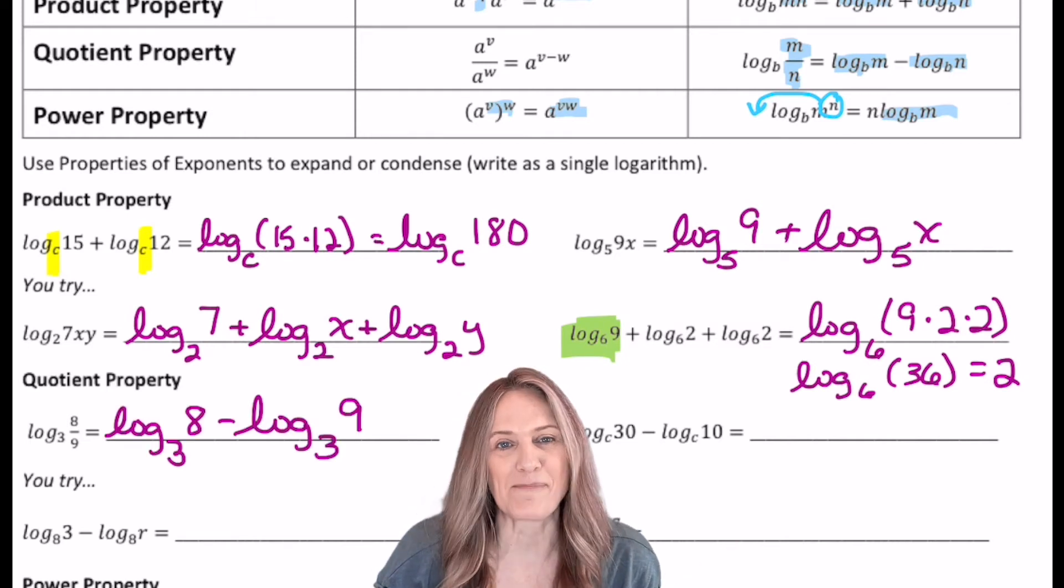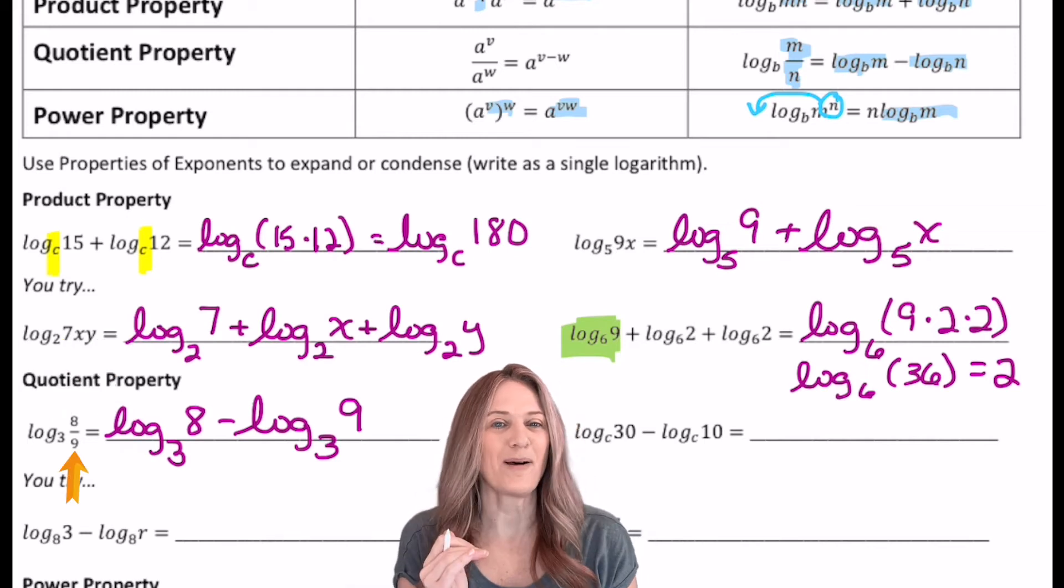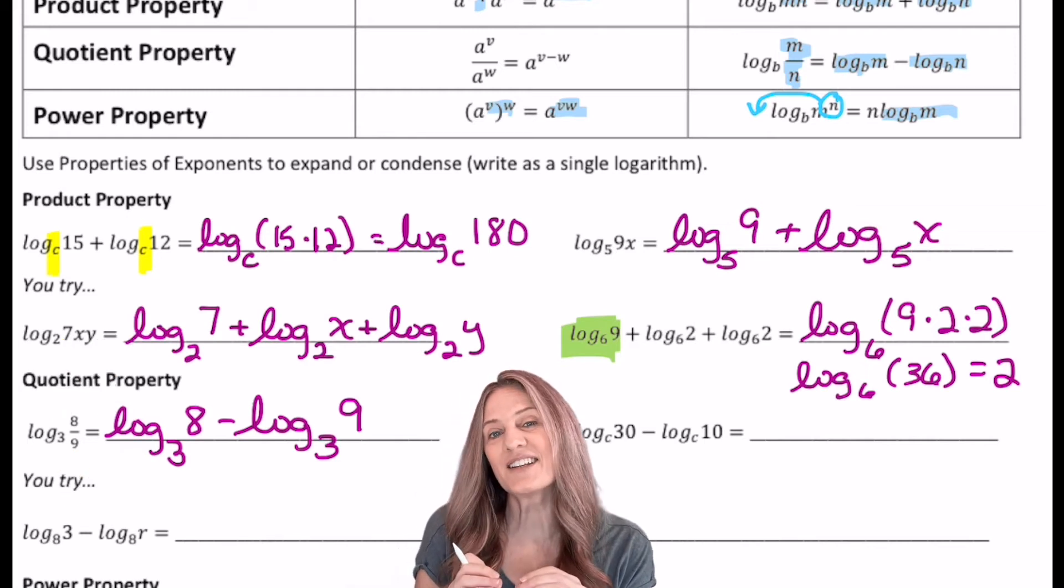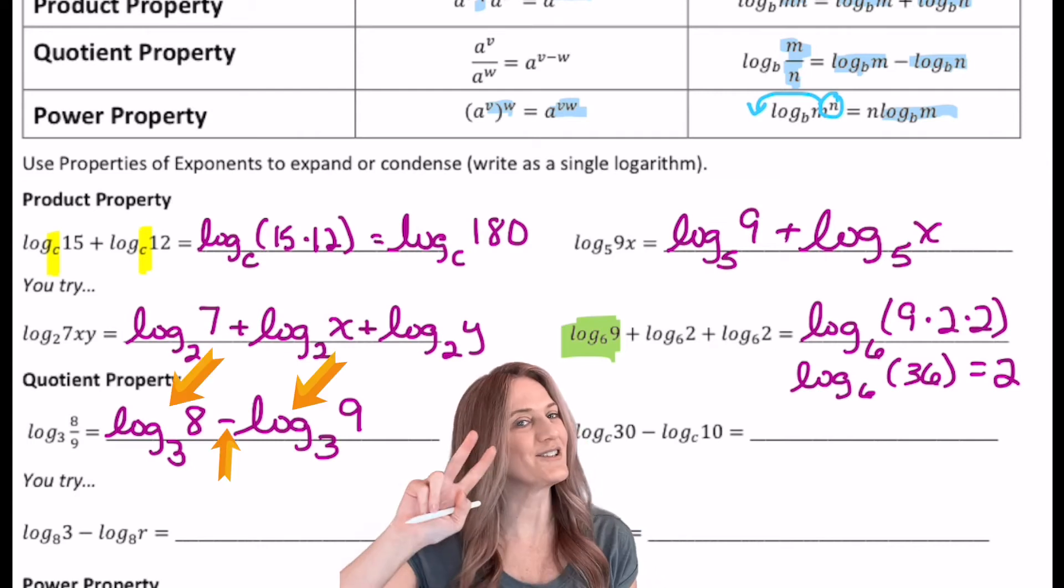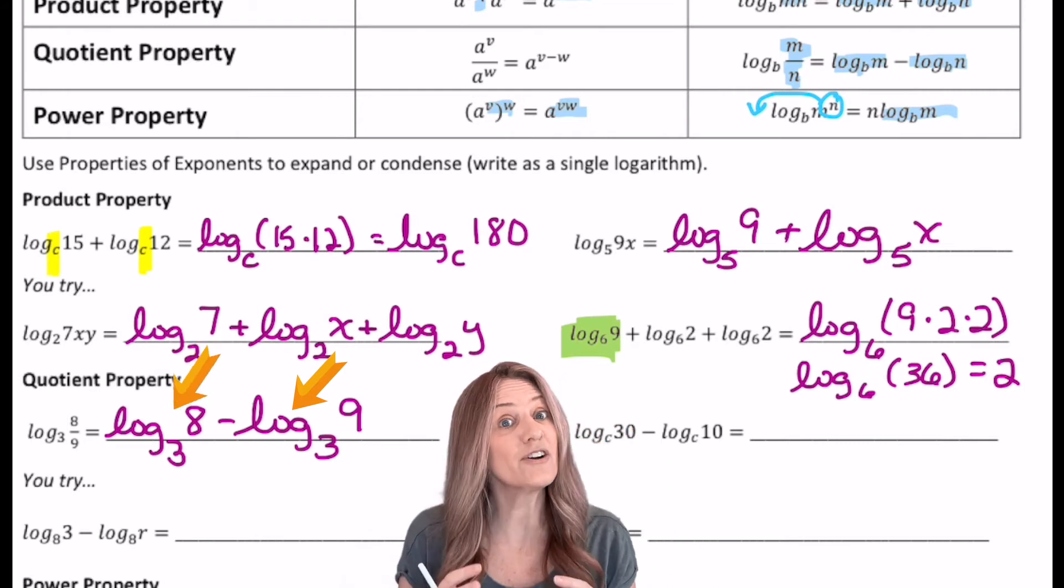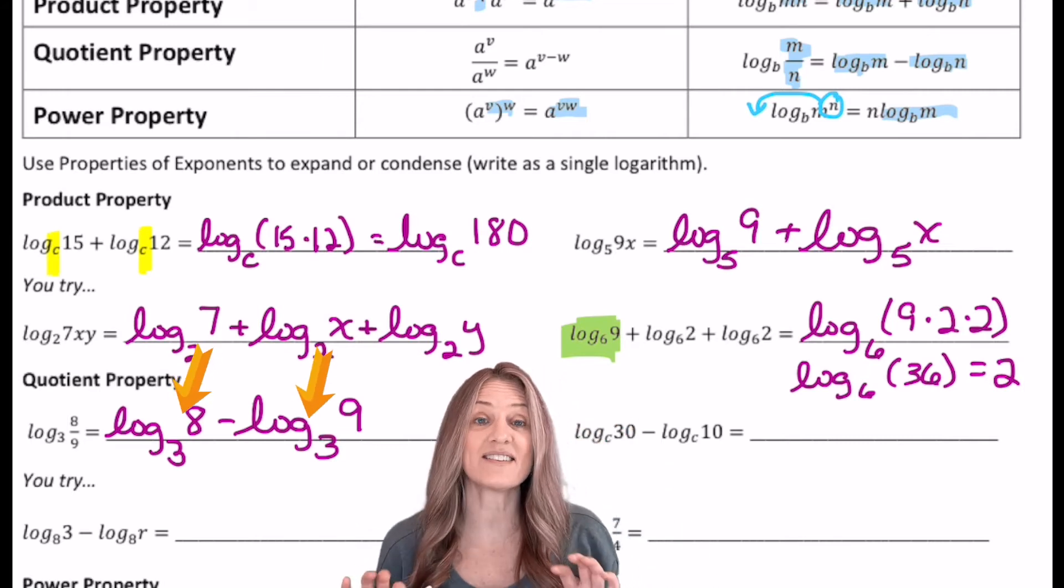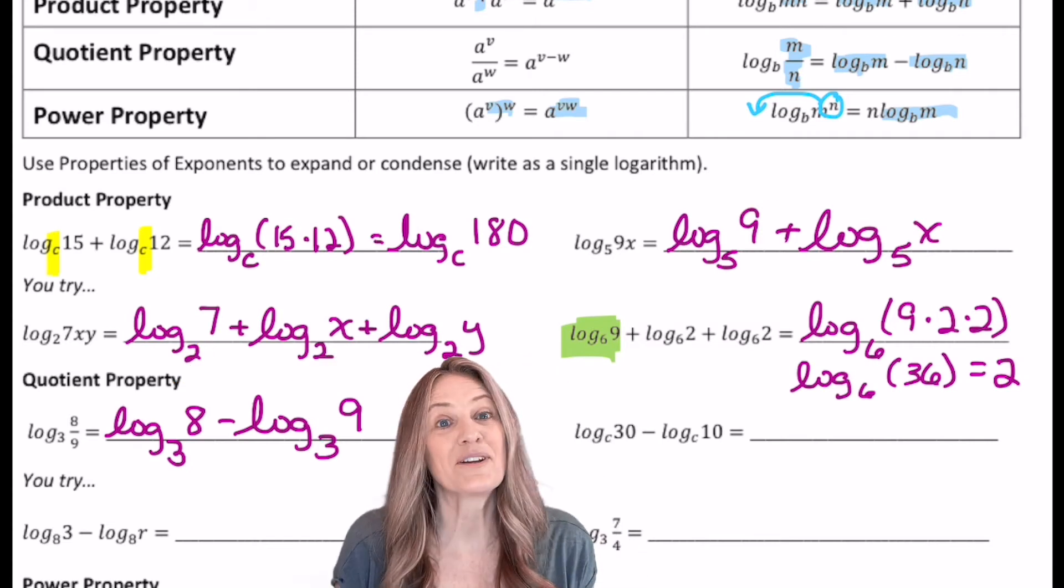Let's practice the quotient property. I have a single logarithm where the argument is a division problem. Well, remember, with division, what do I do with exponents? Subtract. So I'm going to separate that into two logs with subtraction. The numerator has to be the first and the denominator the second. Remember, subtraction is not commutative. And now to condense.